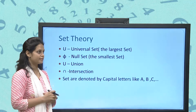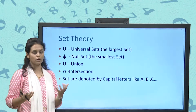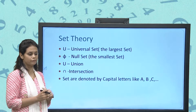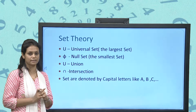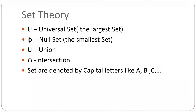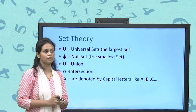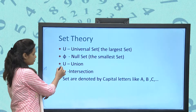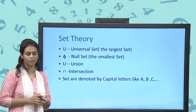Let's revise set theory. U is the universal set — the largest set. Phi (φ) is the null set — the smallest, containing no values. The union symbol is ∪ and the intersection symbol is ∩. Sets in set theory are denoted by capital letters.